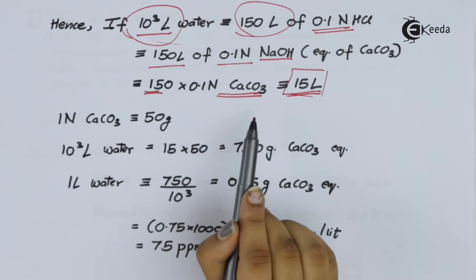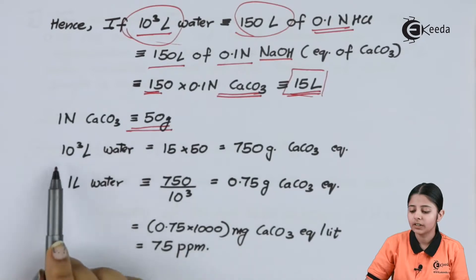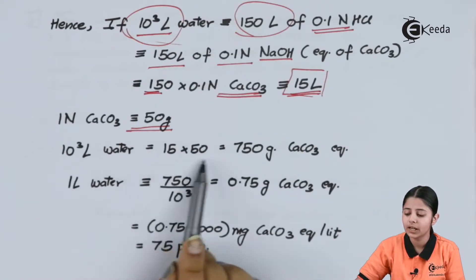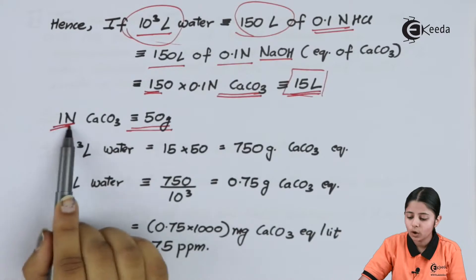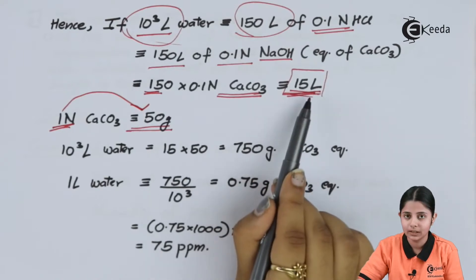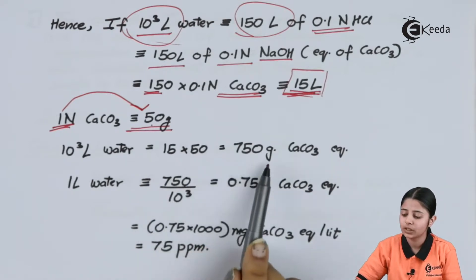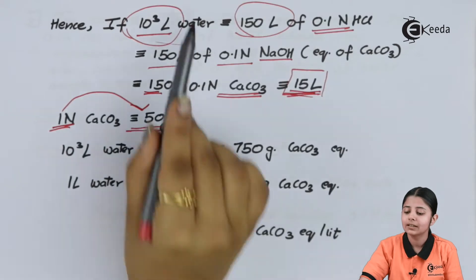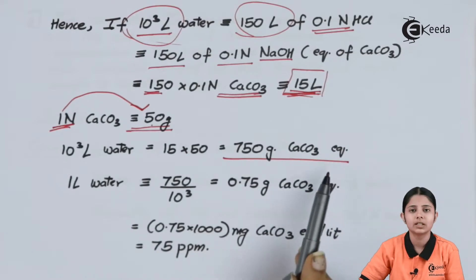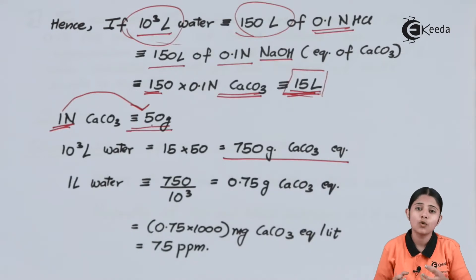One normal CaCO3 corresponds to 50 grams. So 10³ liters of water will correspond to 15 × 50 = 750 grams of CaCO3 equivalent. This 750 grams of CaCO3 equivalent represents the hardness of that water sample in 10³ liters of water.